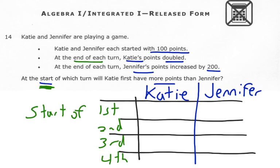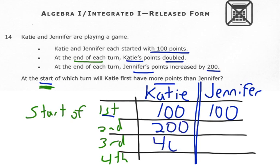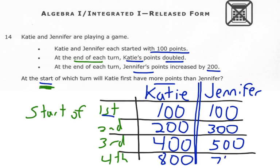All right. So my table looks like this. The start of the first turn, second, third, and fourth. And I have Katie and Jennifer's points. That's going to represent my columns. So they each started with 100. So the start of the first turn, they both had 100. And Katie's are doubling. So I'm just going to keep doubling those. So 200 and then 400. And then if we double 400, we get 800. And now Jennifer's are always increasing by 200. So 100 plus 200 is 300. 300 plus 200 is 500. And 500 plus 200 is 700.